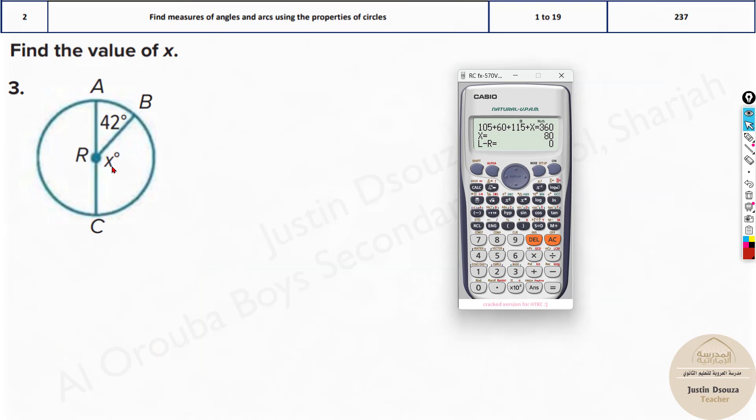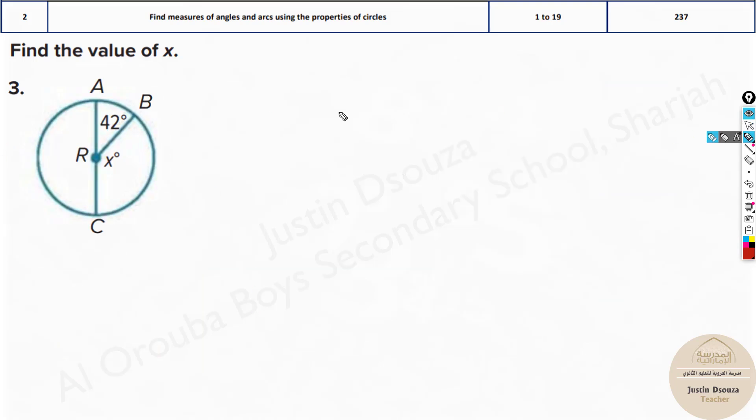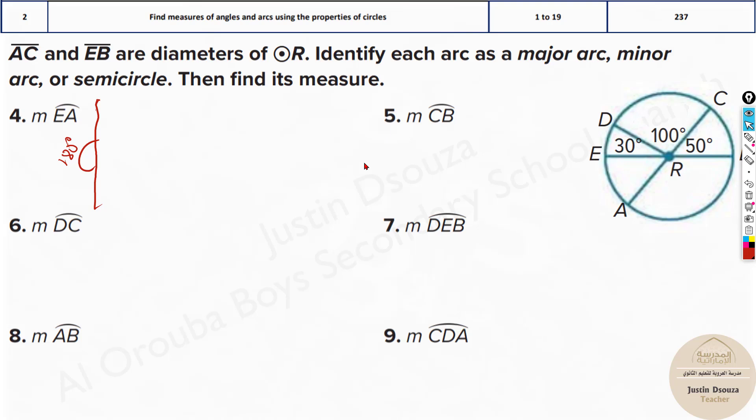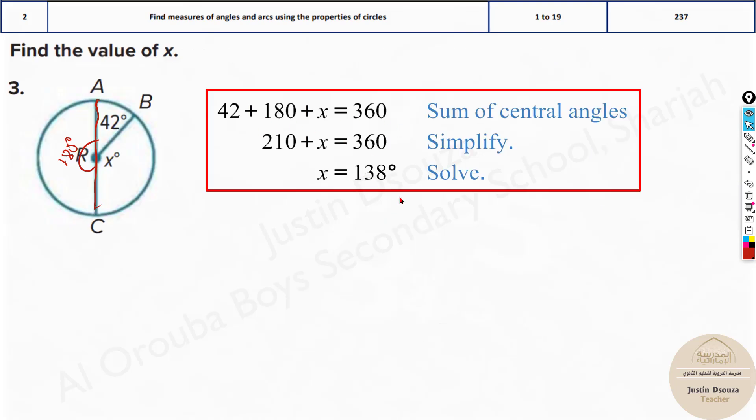Similarly you can try the others. Here we have been given 42 and we have no clue what is x on the other side. But if you see this is the diameter, they generally mention this. So this AC line is the diameter, which is 180 degrees. 180 plus 42 is 222. You just do 360 minus that you'll get the answer.